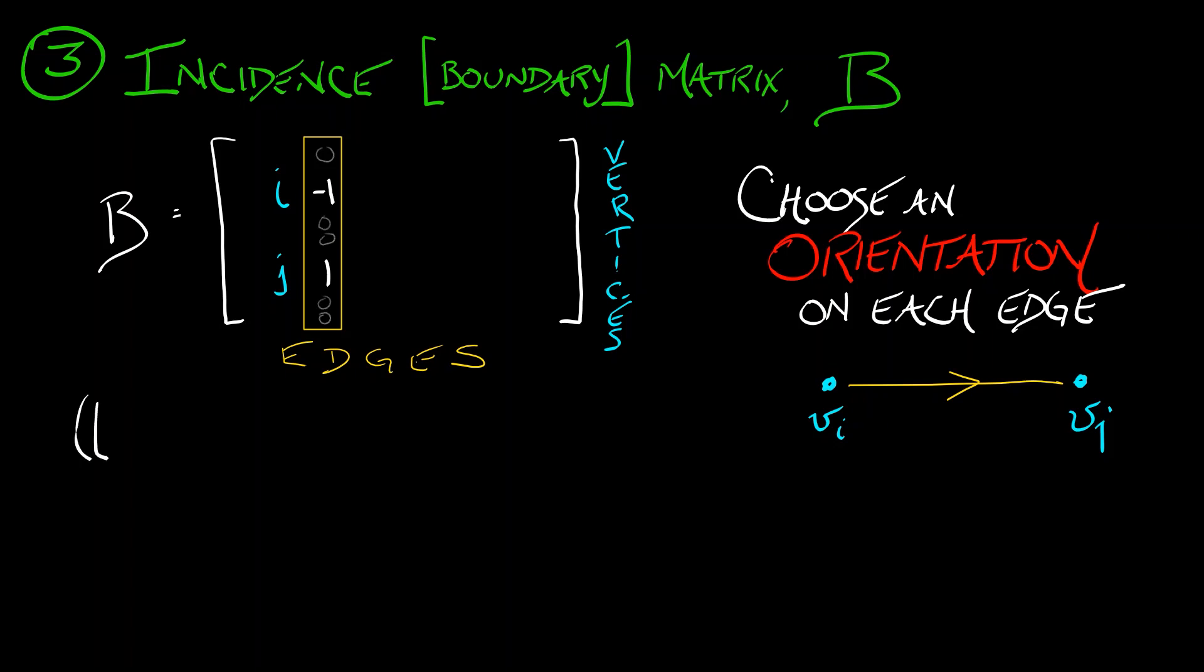This column is telling you that there's an edge that goes from v_i to v_j. Now, again, this all depends on an orientation, but that orientation is going to be arbitrary. It's not really going to impact what we do with this boundary matrix, because what we're going to do with it is define the matrix that we've really been working towards.